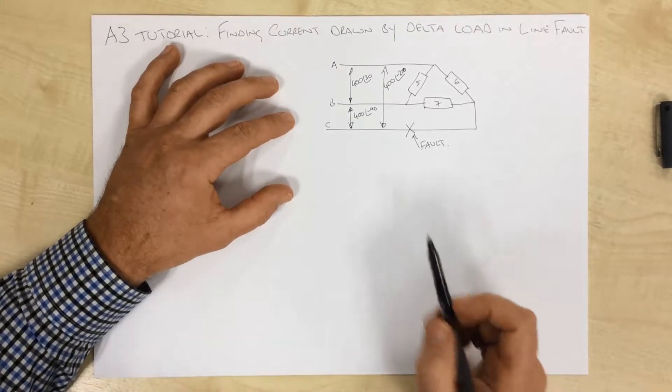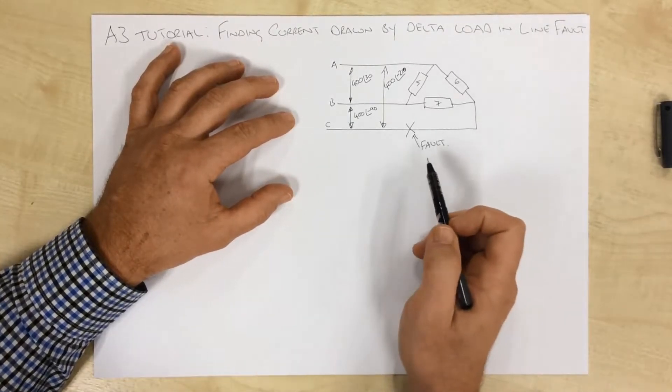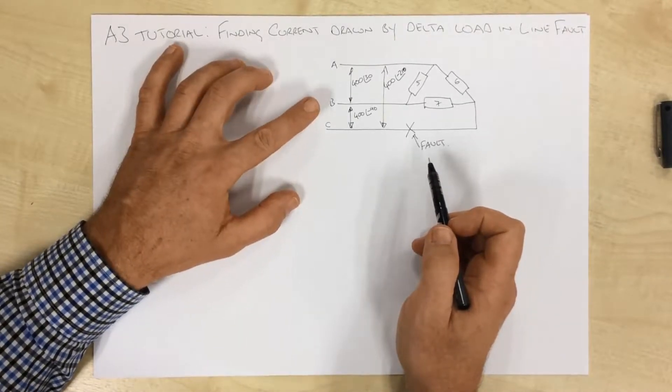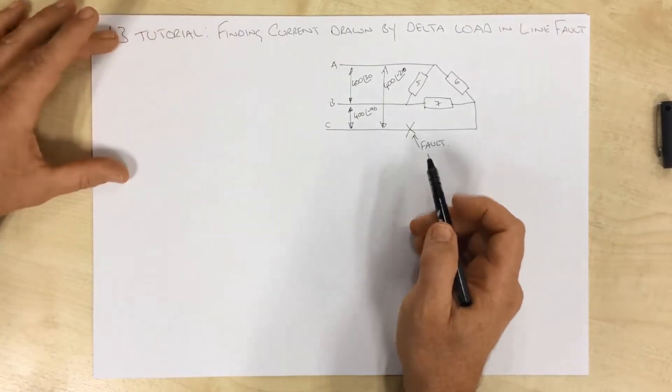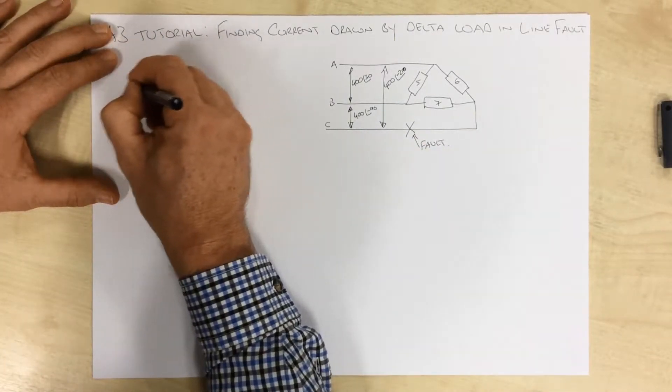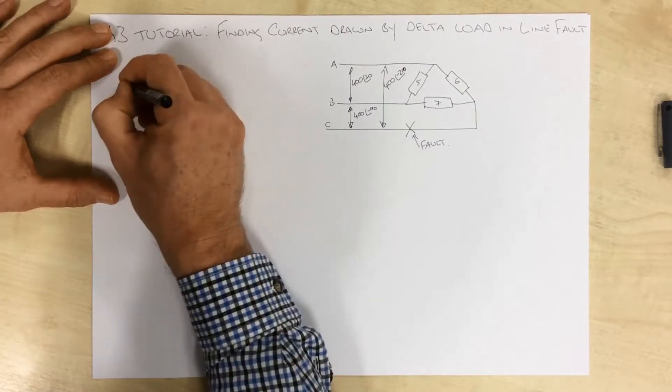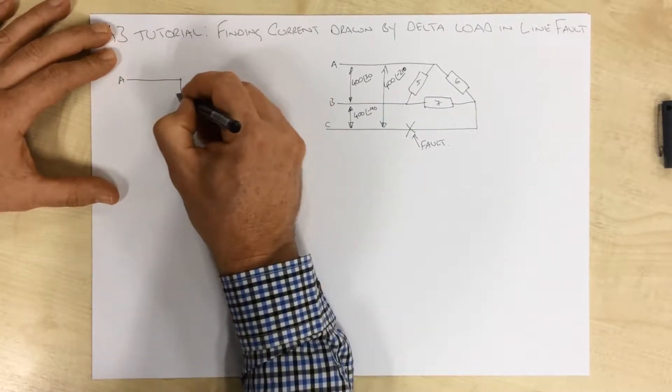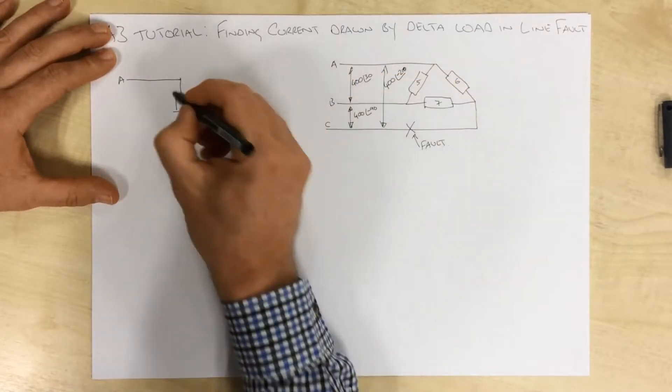So to look at what's going on here, it's probably easiest to actually redraw that in a way that's a little bit easier to look at. Over here, we have our line A that's coming in, which is connected off to this impedance.